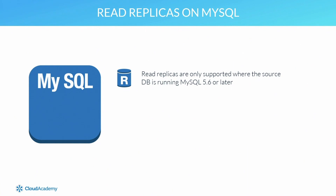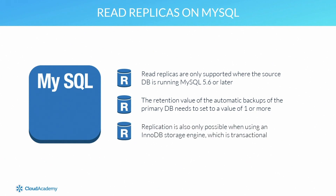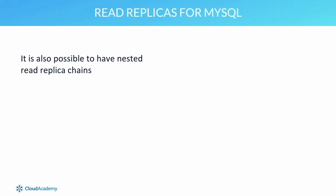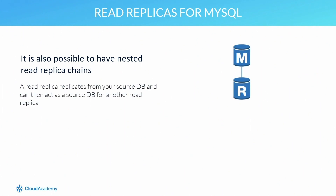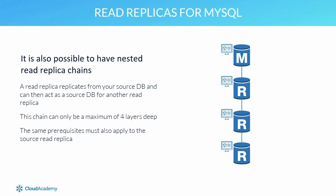Another prerequisite is that the retention value of the automatic backups of the primary database needs to be set to a value of one or more. Replication is also only possible when using an InnoDB storage engine, which is transactional, as opposed to MyISAM, which is non-transactional. It's also possible to have nested read replica chains — for example, a read replica which replicates from your source database can then act as a source for another read replica. However, this chain can only be a maximum of four layers deep.